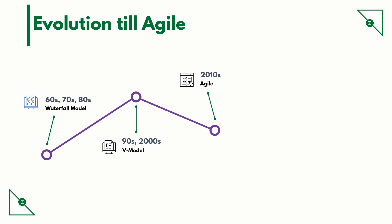During the 2010s, the need for increased speed to market demanded a more flexible SDLC model. The Agile SDLC model is a combination of iterative and incremental process models with a focus on process adaptability and customer satisfaction by rapidly delivering a working software product.